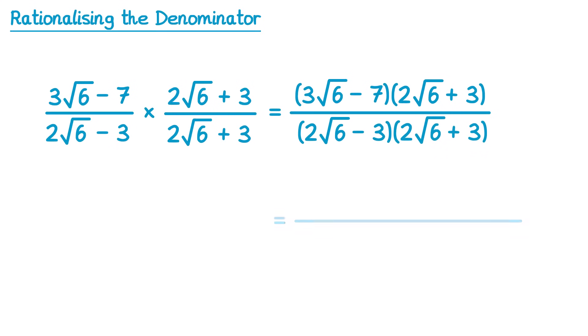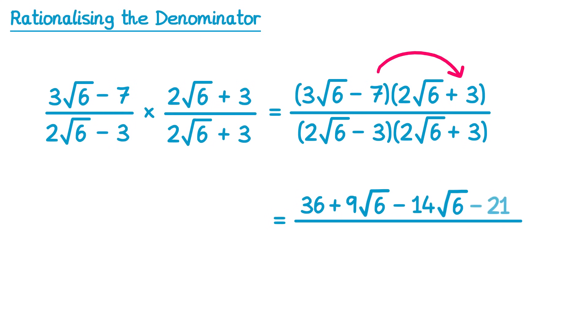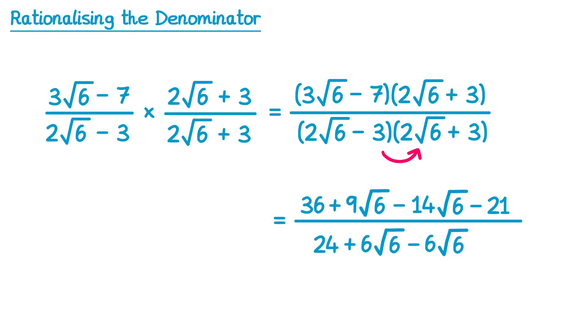So we've got lots of expanding to do. Starting with the top: 3 root 6 times 2 root 6 — we multiply the root 6's together to get 6, and 3 times 2 also gives 6, so it's 6 times 6, which is 36. Then 3 root 6 times positive 3 is 9 root 6. Then negative 7 times 2 root 6 is negative 14 root 6. And negative 7 times positive 3 is negative 21. Now expanding the bottom: 2 root 6 multiplied by itself — root 6 times root 6 is 6, and 2 times 2 is 4, so 6 times 4 is 24. Then 2 root 6 times positive 3 gives positive 6 root 6. Then negative 3 times 2 root 6 gives negative 6 root 6. And negative 3 multiplied by positive 3 gives negative 9.